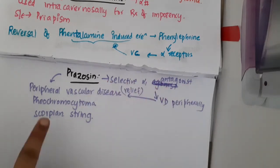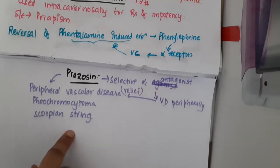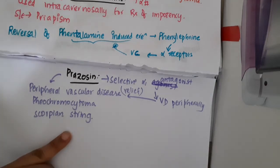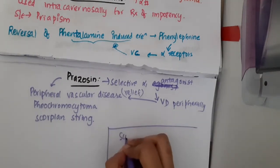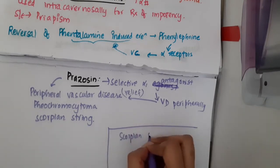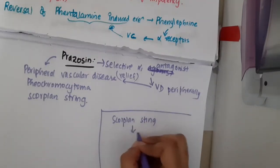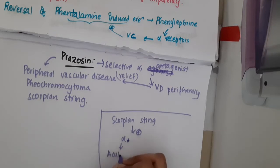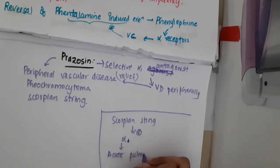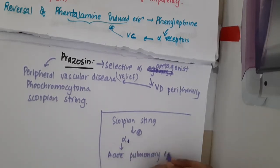Alpha 1 antagonism is better for pheochromocytoma. So what happens actually in a person with scorpion sting—this will cause alpha receptor stimulation, and thus it causes acute pulmonary edema, which can be prevented by using prazosin.